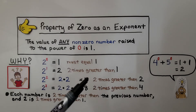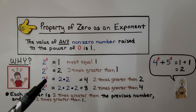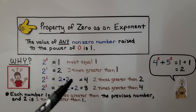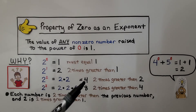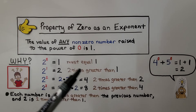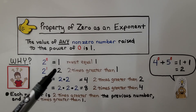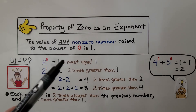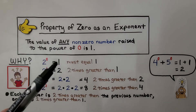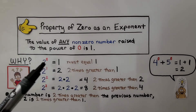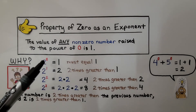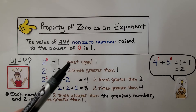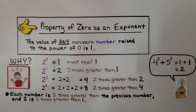8 is 2 times greater than 4, which is 2 raised to the second power — 2 times 2. And 4 is 2 times greater than 2, which is 2 raised to the first power. And 2 is 2 times greater than 1, which tells us that 2 raised to the 0 power must equal 1.